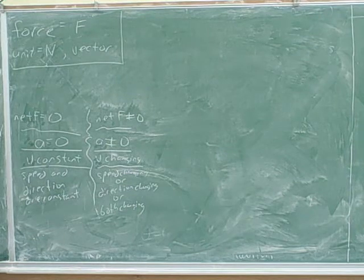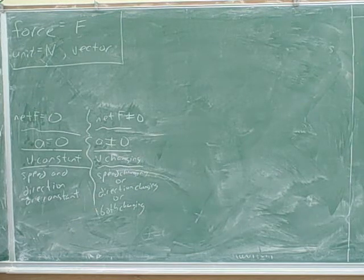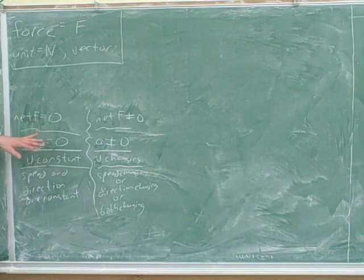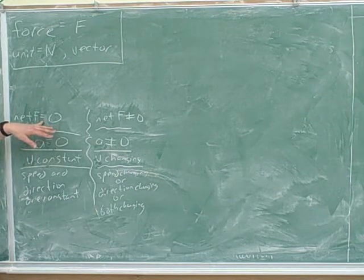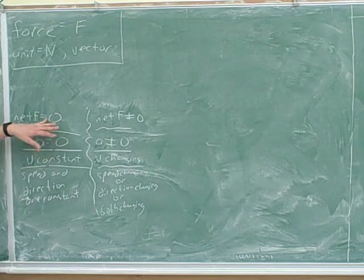For example, right now, my acceleration is zero. Relative to the Earth, my acceleration is zero. But there is a gravitational force on me. It's just being canceled by the normal force from the floor. Has your instructor talked about the normal force yet? Okay. So, the reason I'm not accelerating now is because the gravitational force on me is being canceled by the normal force from the floor. So, again, acceleration zero doesn't mean that the individual forces are zero. It just means that they're all canceling out.